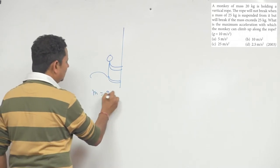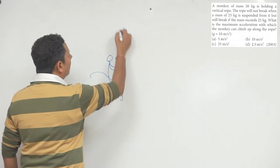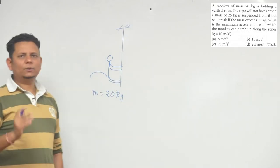So this is how the monkey is here. The mass is 20 kg. Now, the rope is here. When the monkey climbs, the tension will increase.